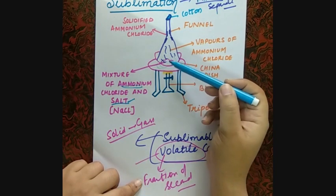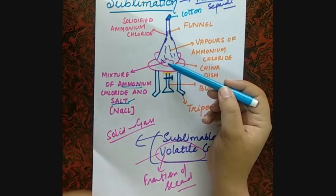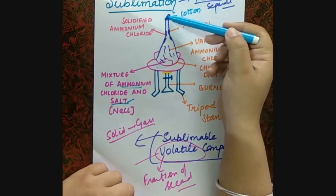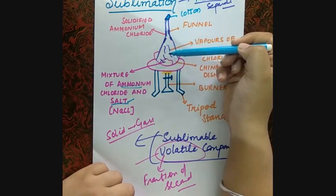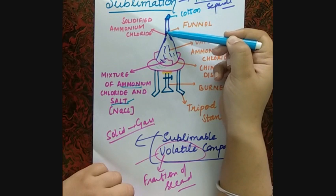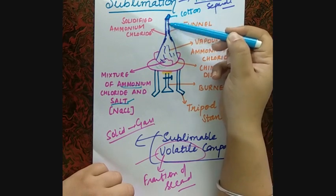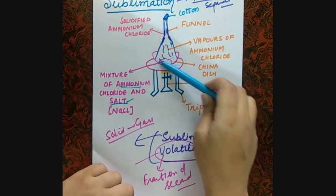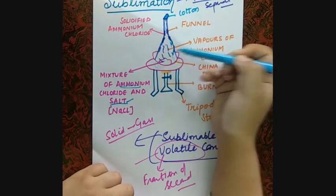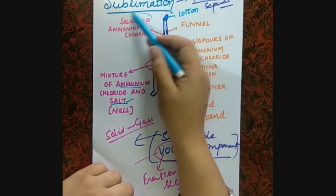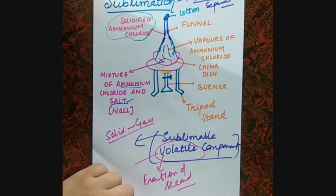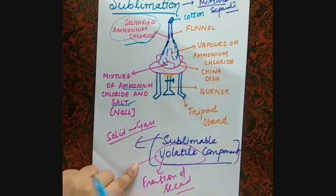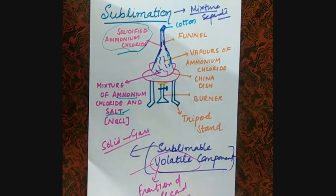Then what happens is that the mixture particles start to heat up. The fumes start to go up, then condense and start to collect. These are vapors. What happens is that ammonium chloride sublimes and collects in the funnel, while salt remains behind. So ammonium chloride and salt are separated.